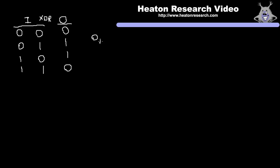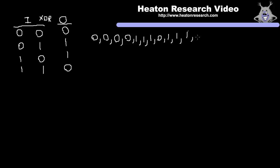The first row would be 0, 0, 0, 0 — you give it a 0, you want a 0 back; you give it that 0, you want that 0 back. Then the next row is 0, 1, 1. Then the next row is 1, 0, 1. And then the final row is 1, 1, 0. That is exclusive OR arranged as a temporal sequence of numbers.